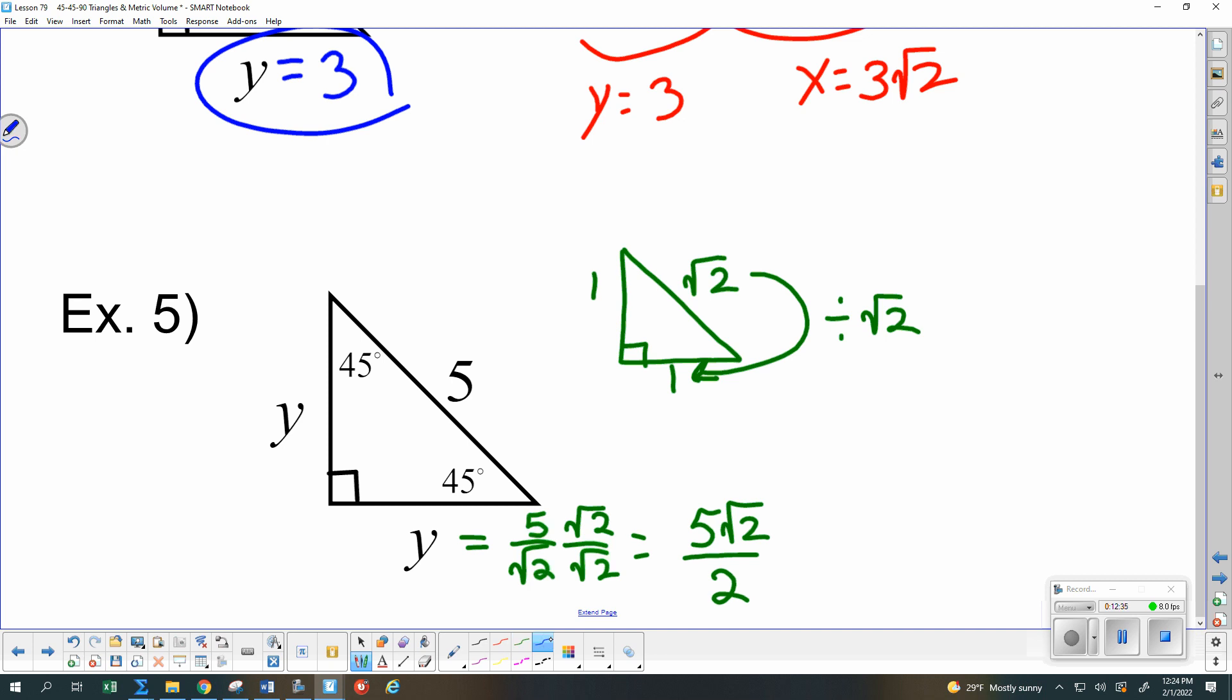If you prefer, you can still set up the proportions. y over 1 is equal to y over 1 is equal to 5 over root 2. Oh, y is 5 over root 2, which is what we had here and rationalize the denominator. And we have exactly the same thing again. Questions from anybody on either topic from today?